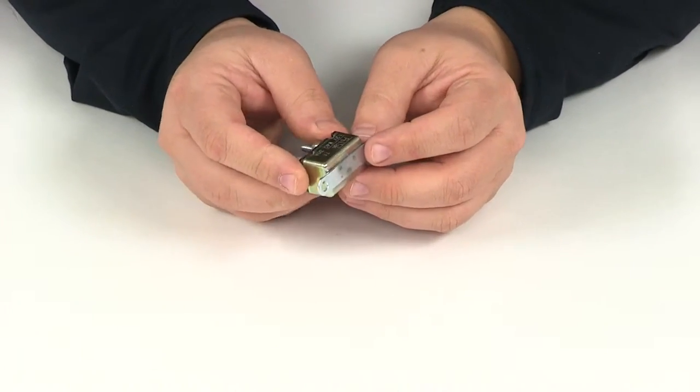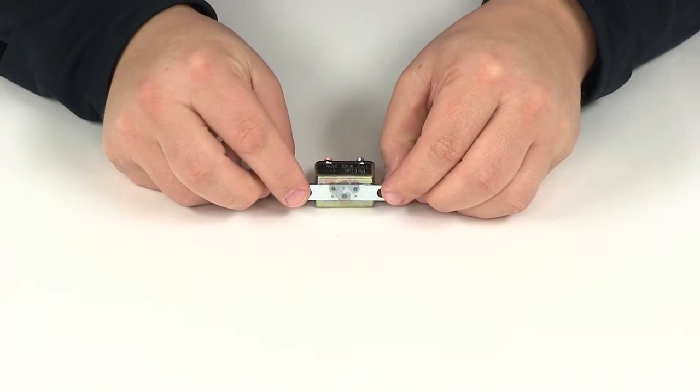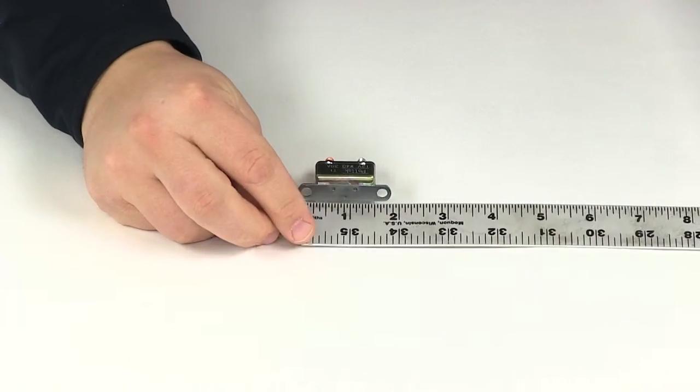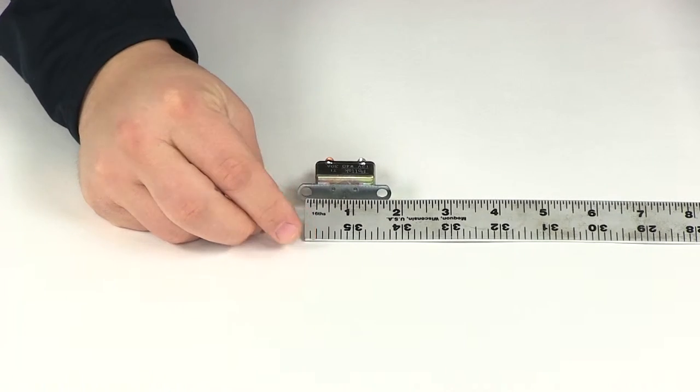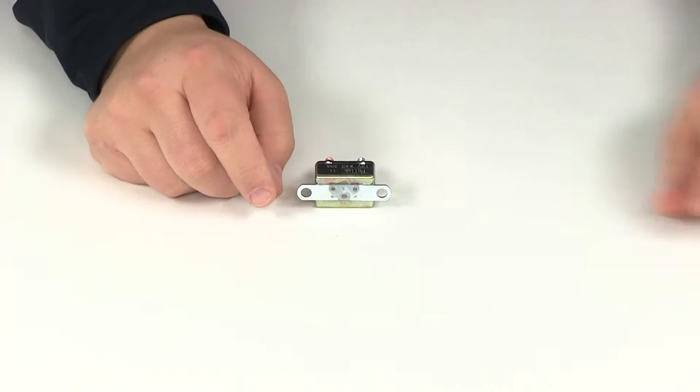Now this is going to feature a metal housing with a straight mounting bracket. If we take a measurement the distance that we have between those mounting holes center on center, that's going to give us a measurement of 1 and 9 sixteenths of an inch and those mounting holes are going to have a diameter of 3 sixteenths of an inch.